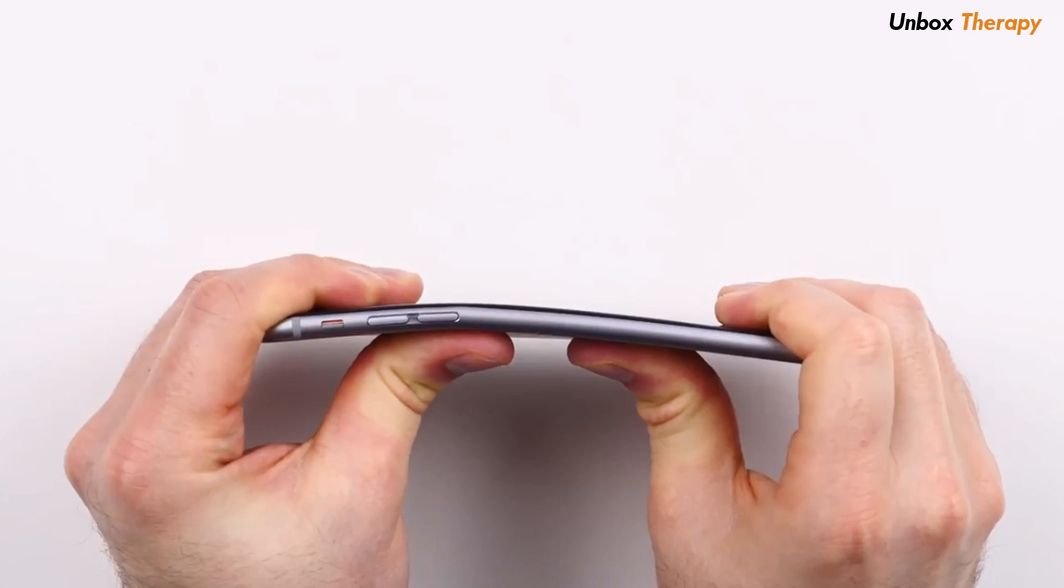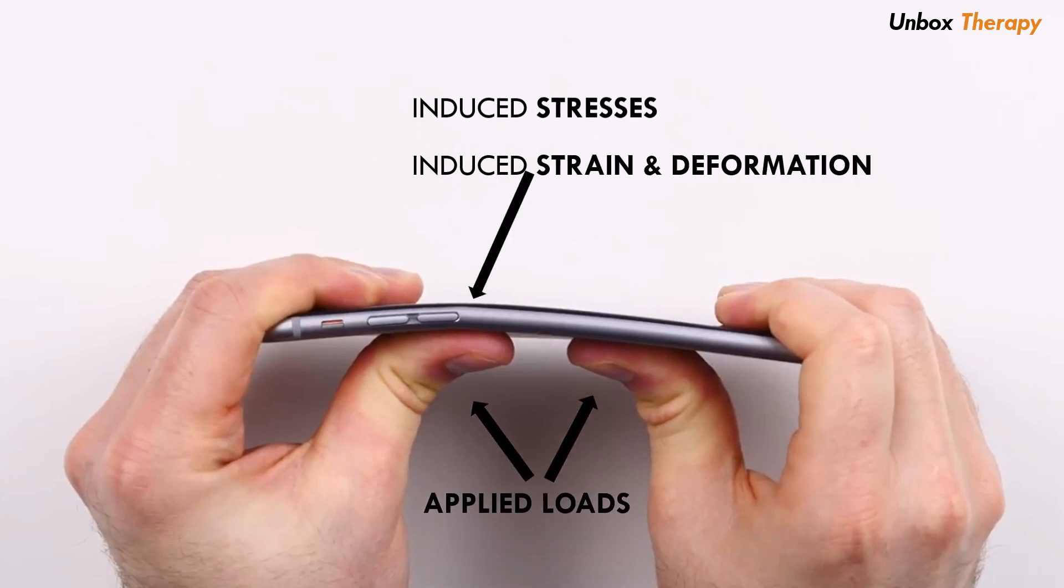This bending test is a clear example about mechanics of solids. This is the applied loads where Lou is using his thumb to apply force, and the rest of the fingers are the constraints. As you can see, the induced stresses are highest at the point where I've indicated using the arrow, where the strain and deformation actually takes place. I will provide the link for this video in the description.